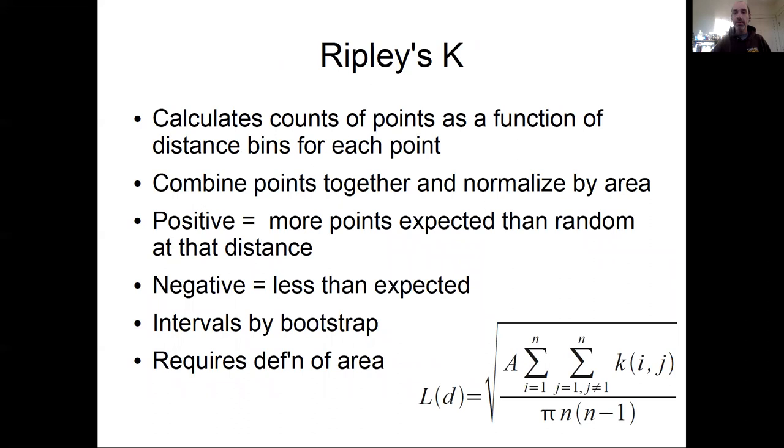The most common statistic for point pattern analysis is known as Ripley's K. It's a fairly simple statistic. What you do is you bin your data by distance. So you're going to start with a focal point and you're going to calculate counts of points as a function of distance bin. So you're going to move outward from each point and calculate how many points are one meter away, how many points are two meters away, how many points are three meters away, how many points are four meters away.